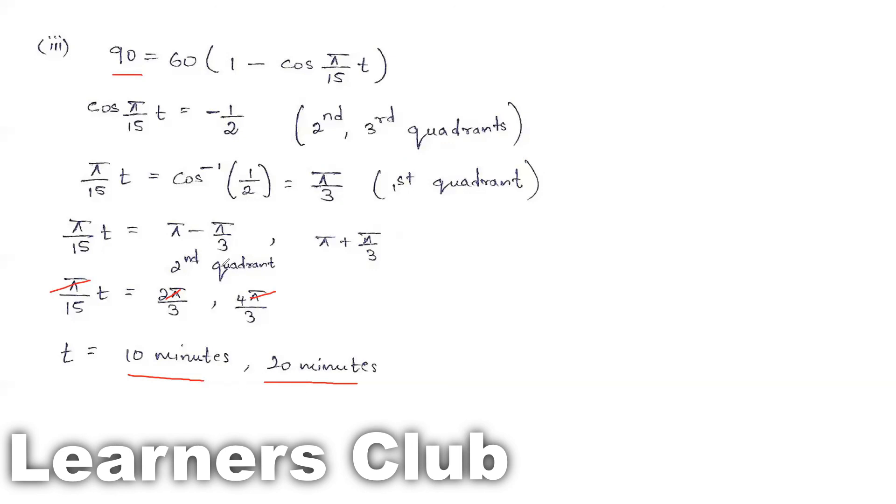Since cosine is a periodic function, you can find more values because it repeats after every interval of time. But this is more than enough to complete the question.